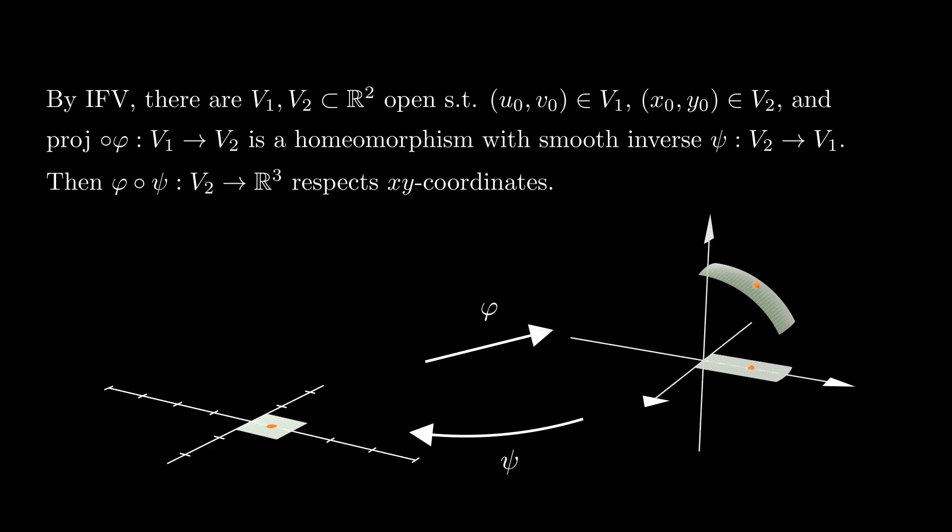Notice that the inverse of this composition, which we call psi, composed with phi is a smooth map that respects the x and y coordinates, so its image is precisely the graph of the smooth function of x and y, the smooth function being precisely the third coordinate of the composition of phi and psi.